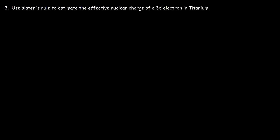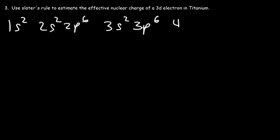Now let's try another example — this time let's focus on the 3d electron in titanium. Let's begin by writing the electron configuration: 1s2, 2s2, 2p6, 3s2, 3p6, 4s2, 3d3. For those of you who may have difficulty writing the electron configuration, go to YouTube and type in 'electron configuration organic chemistry tutor' — I have a lot of videos on that topic.